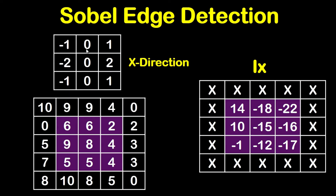Now we will multiply and add: 10 by negative 1, plus 9 by 0, plus 9 by 1, plus 0 by negative 2, plus 6 by 0, plus 6 by 2, plus 5 by negative 1, plus 9 by 0, plus 8 by 1. This will result in 14.